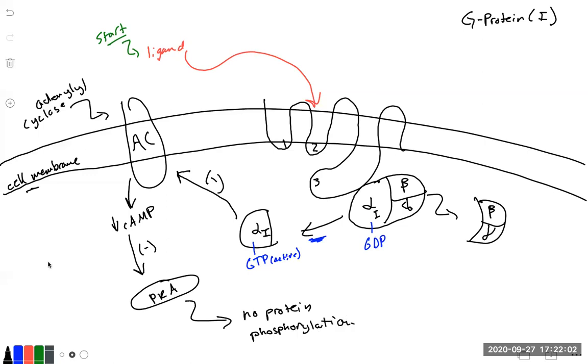Because remember, this is a kinase. And a kinase phosphorylates other proteins. So if we have no protein phosphorylation, no proteins are changed, their shape doesn't change, their function doesn't change.